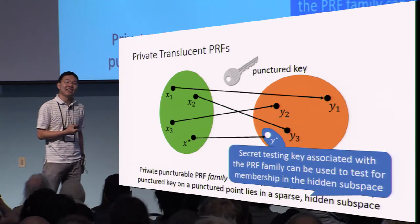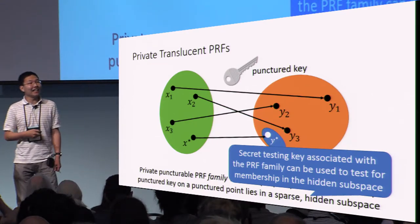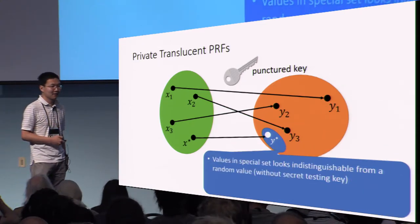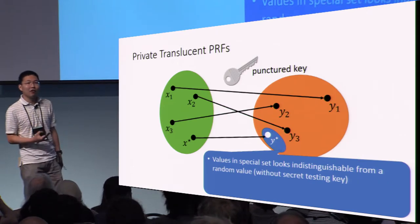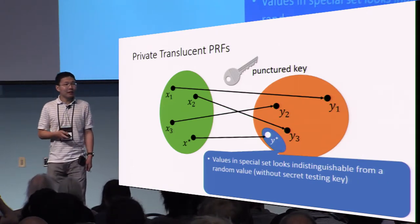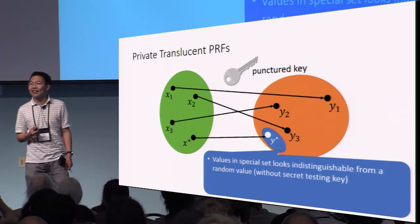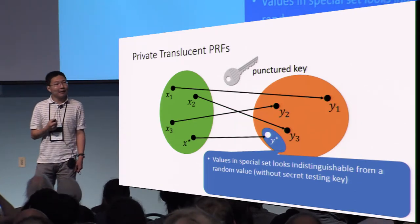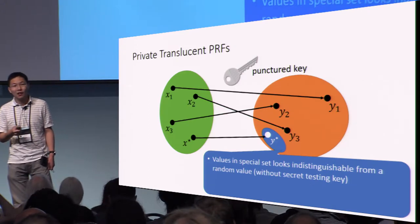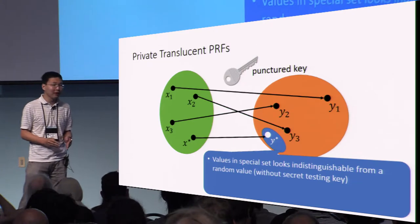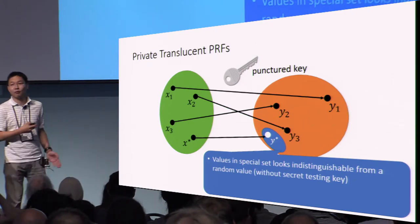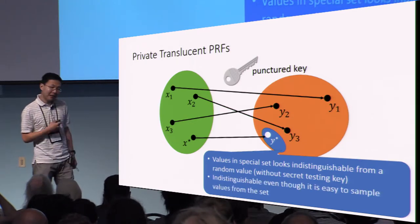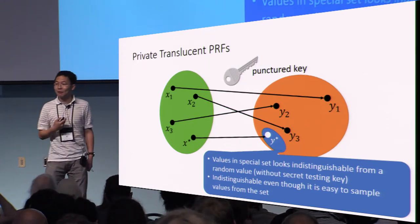Moreover, there is a secret testing key associated with this PRF family that allows you to take an element in the range and decide whether it is contained in this subspace or not. First, the values that are contained in this subspace should look roughly indistinguishable from a random value in the range of the PRF. This is important because if you want to be able to privately puncture a PRF, it better be the case that the adversary cannot just evaluate the PRF and test whether that evaluation is at the special point or not. It is further complicated by the fact that when the evaluator is computing a PRF, it's actually able to sample elements from this subspace by itself — it can sample a PRF key, puncture it, and evaluate at the punctured point to derive elements from this subset.